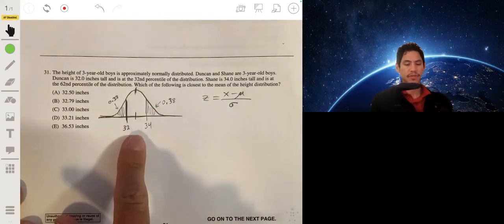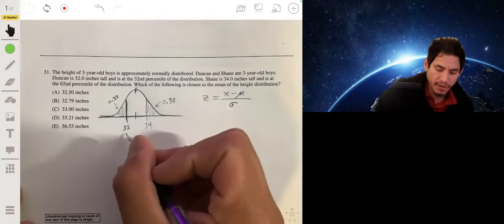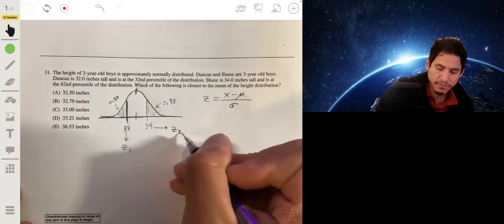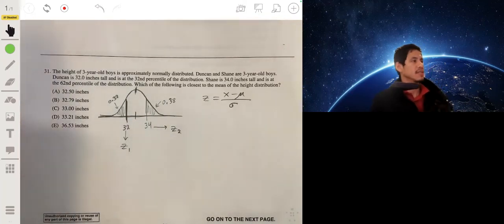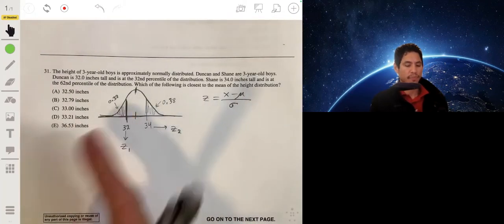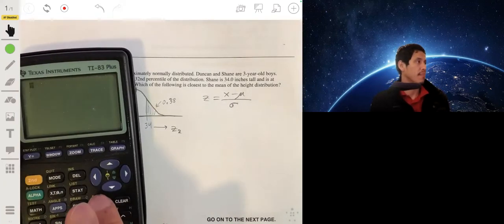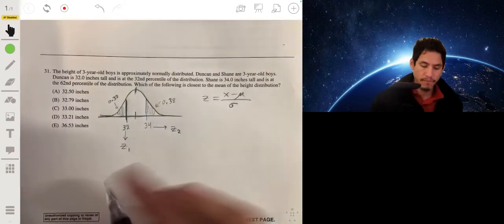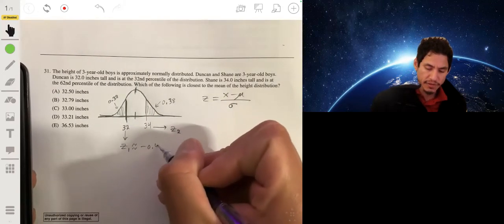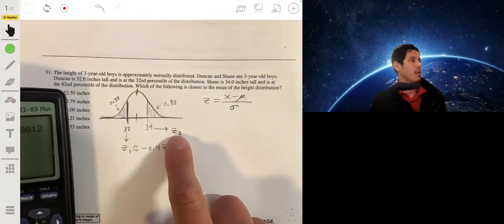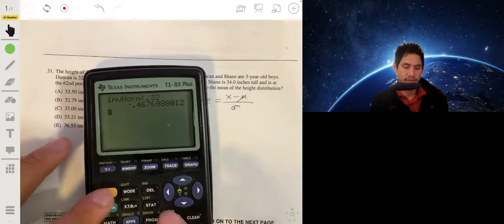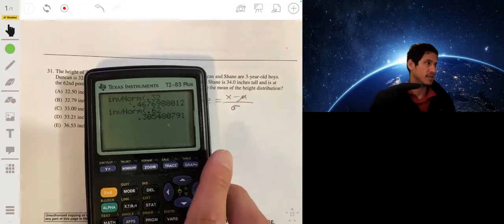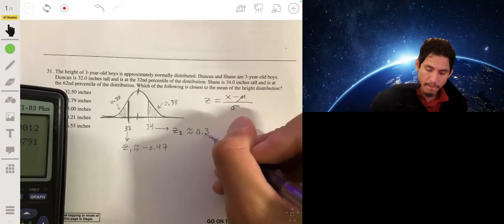So since this is the normal distribution, each of these values correspond to a z-score. So we'll have this one, this 32 will correspond to z1, and the 34 will correspond to z2. So z1 is the value in the normal distribution with 0.32 area to the left. So we can use this calculator, go to the inverse norm function, type 0.32, and it'll give us our z1. So our z1 is about negative 0.47. Z2 will have an area of 0.62 to the left, so inverse norm again 0.62. So z2 is about 0.305.